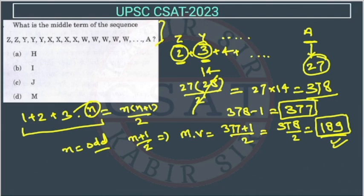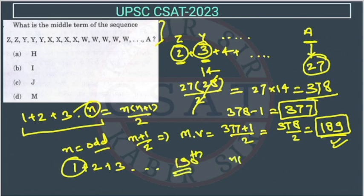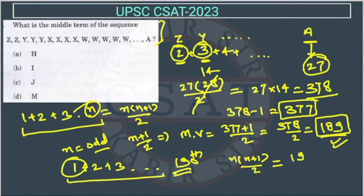Since we assumed 1 at the start, the actual position to find is 189 + 1 = 190. So the 190th term is the middle term. Using the summation formula n(n+1)/2 = 190, we need to find the value of n. If n = 19, then 19 × 20 / 2 = 190. So the value of n is 19.